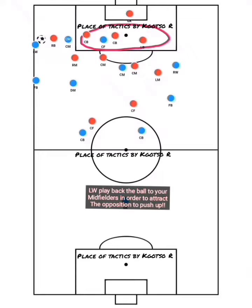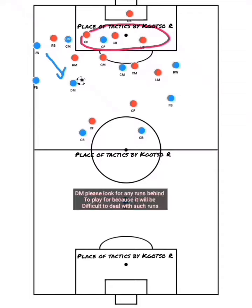What you have to do as a left wing is play the ball back straight to your midfielder — in this case, your defensive midfielder. By doing so, most of the time the opposition team will then push up in order to force the play backwards. What the midfielder, or in this case a central back, should do is look for anyone making the run behind.